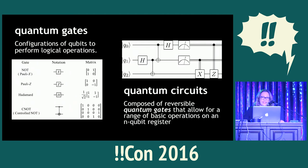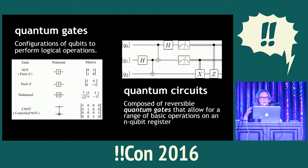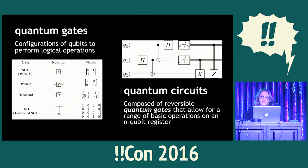Quantum circuits are composed of reversible — and this is very important — quantum gates, and they allow us to do a range of basic operations for an n-qubit register. In a similar and analogous way to how we build up circuits on conventional computing hardware, we can build up quantum circuits out of our qubits that construct gates, that construct circuits.